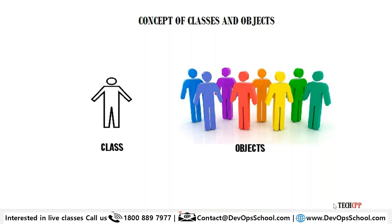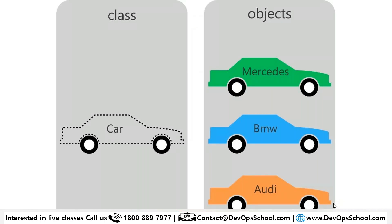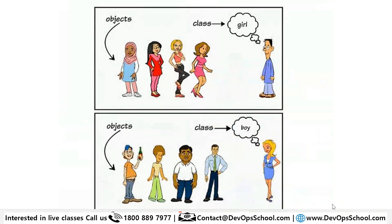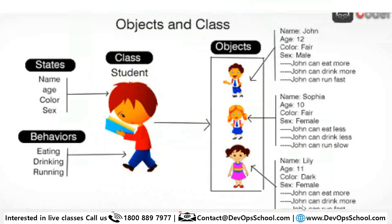A car is a class, and Mercedes, BMW, and Audi are objects — from one class you can instantiate multiple objects. Each object inherits all the properties of the class, but you can override some properties. For example, you might inherit some properties from your parent, but if your parent is a doctor you can override and become an engineer. A girl is a class, different types of girls are objects; a boy is a class, different types of boys are objects.